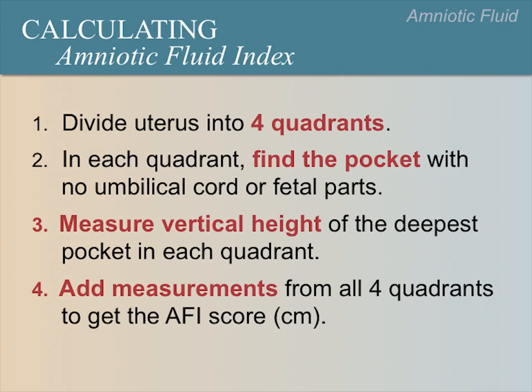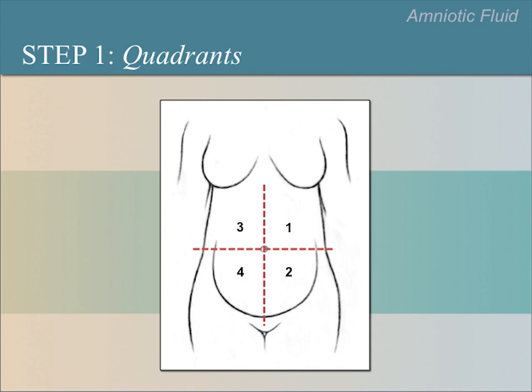There are four basic steps to find the AFI score. First, divide the uterus into four quadrants. In each quadrant, find the area or pocket that does not contain umbilical cord or fetal parts. Next, measure the vertical height of the deepest pocket in each quadrant. Add measurements from all four quadrants to get the AFI score in centimeters.